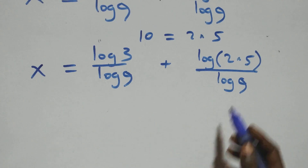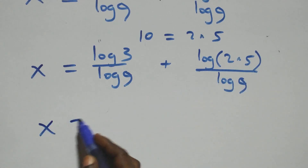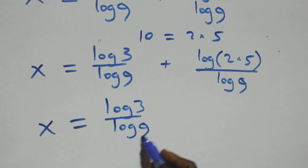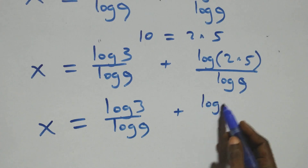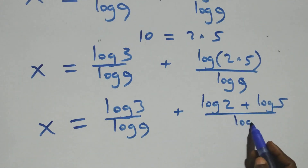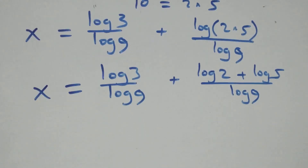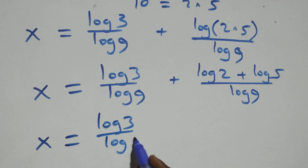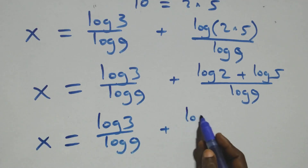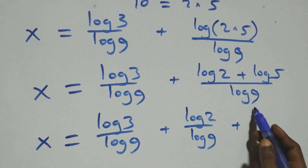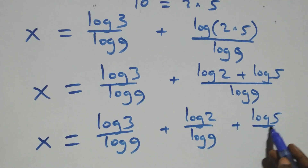Applying the logarithm product rule again, this becomes x equals log 3 over log 9 plus (log 2 plus log 5) over log 9. Then we separate this into individual fractions: x equals log 3 over log 9 plus log 2 over log 9 plus log 5 over log 9.